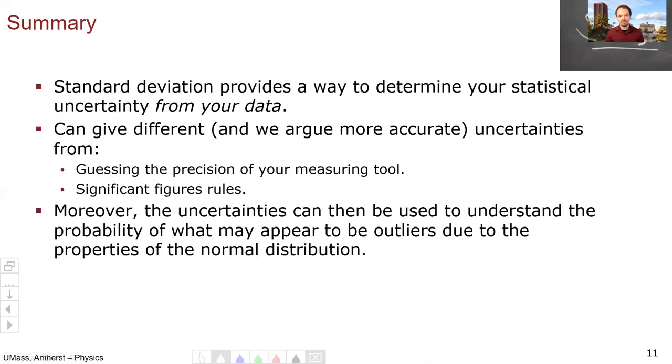So in summary, standard deviation provides a way for you to determine the statistical uncertainty from your data. And this can give a different, and we argue, more exact way of representing your uncertainties as opposed to guessing the precision of your measuring tool or using the significant figures rules. You're using the data to tell you what to do. Moreover, if you use standard deviation, then the uncertainties can be used to understand the probability of what may appear to be outliers due to the properties of the normal distribution. This concludes this video.